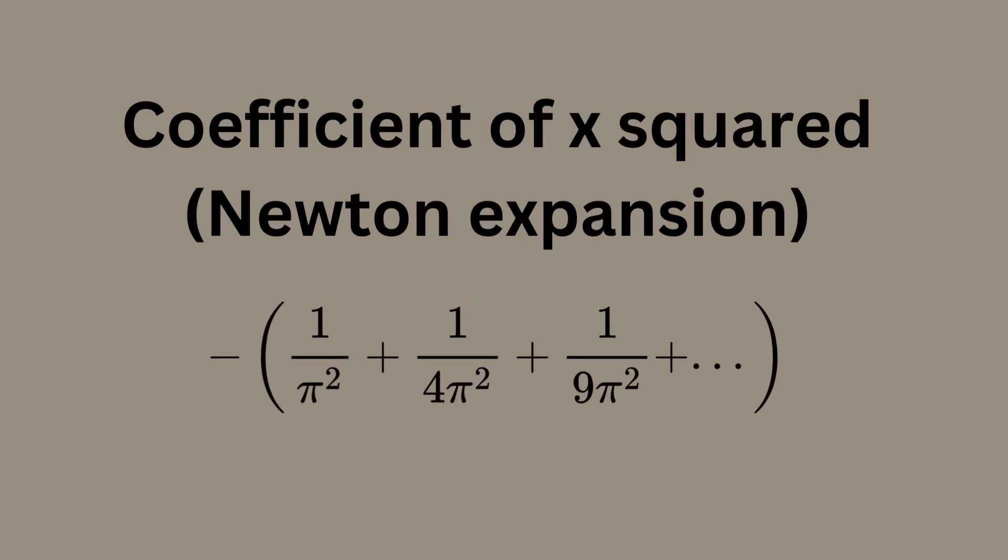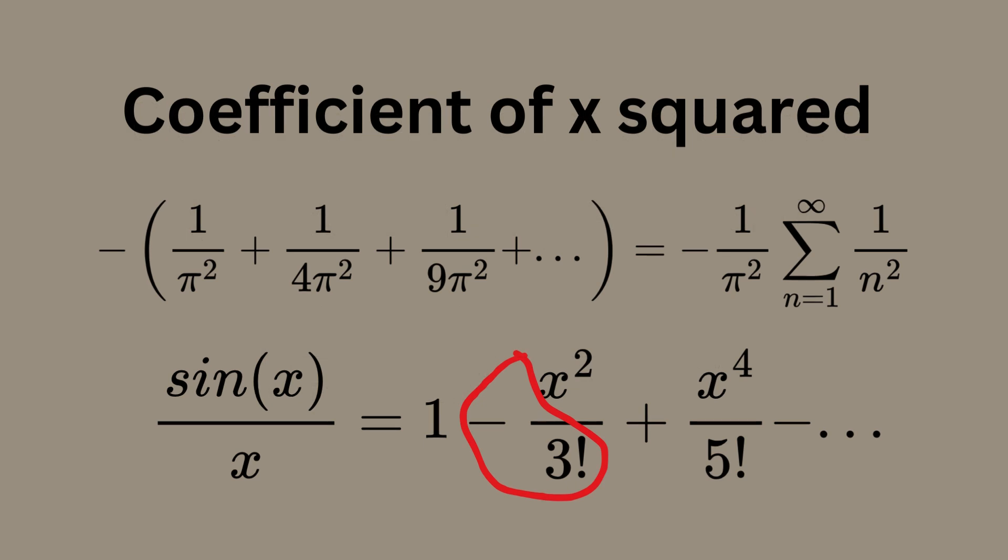Comparing the coefficients led to the equation: the sum of 1/n² from n=1 to infinity equals π²/6.